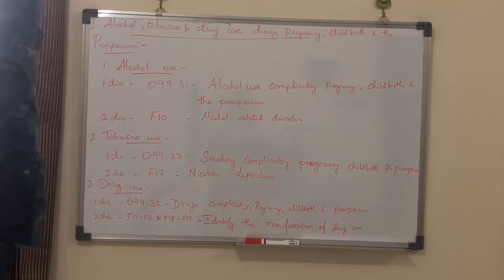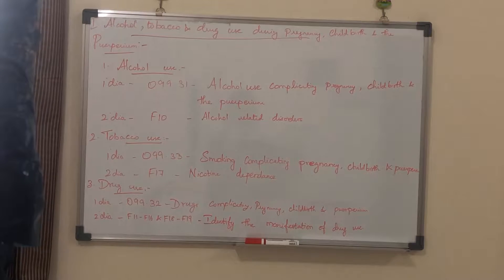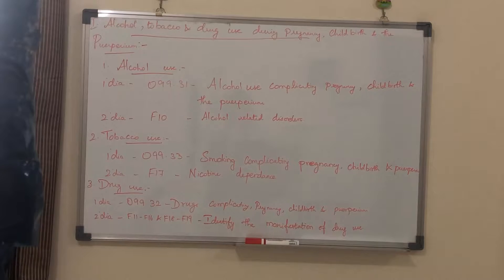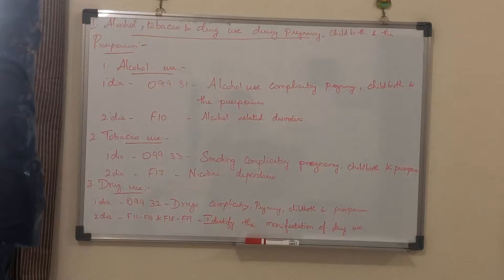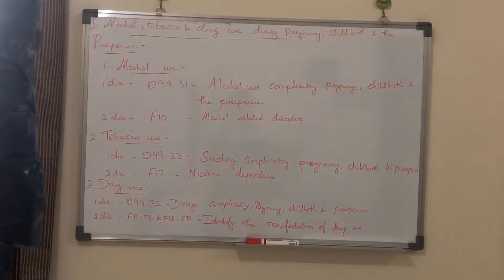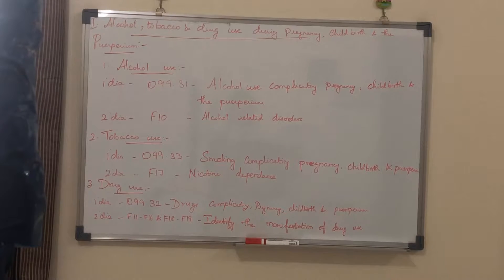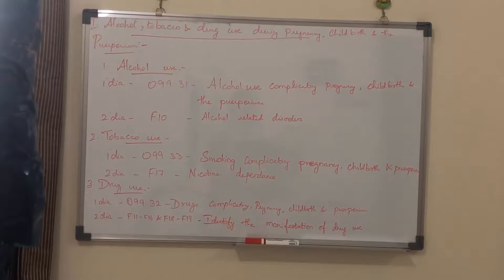The second one is tobacco use. If the patient is using tobacco during pregnancy, then the principal diagnosis would be O99.33, smoking complicating pregnancy, childbirth and puerperium. And the secondary diagnosis is from the F17 category — nicotine dependence code.